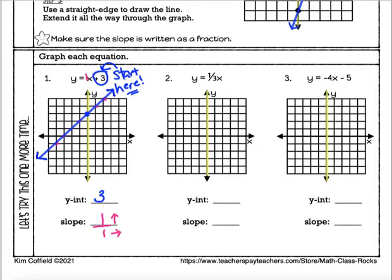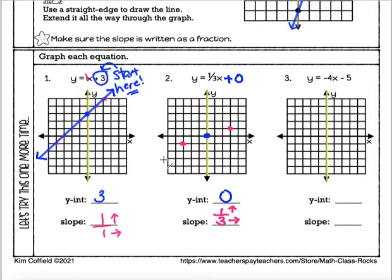Next problem. I need the y-intercept but I'm not seeing anything added or subtracted on the end. When there isn't a number added or subtracted at the end, we think of it as plus 0, so the y-intercept is 0 — we put our first point right at the origin. Our slope is 1 third, which is already a fraction. Positive 1 on top means go up 1, positive 3 on the bottom means go 3 to the right. From the origin I go up 1 and 3 right, then down 1 and 3 left. Then I draw my line through all of those points with arrows on both ends.